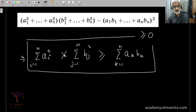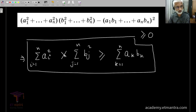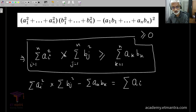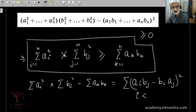That expression written in compact summation notation is the famous Cauchy-Schwarz inequality. In a stylish short form: (Σ aᵢ²)(Σ bⱼ²) − (Σ aₖbₖ)² equals Σ (aᵢbⱼ − bᵢaⱼ)² where the sum is over all i strictly less than j. This is a neat way of writing the entire expression from the previous slide.